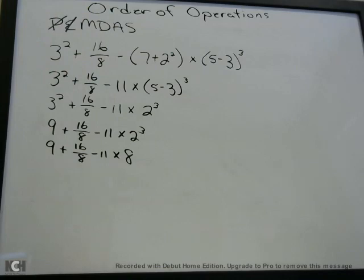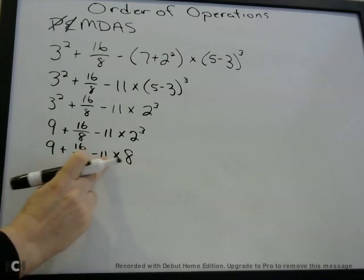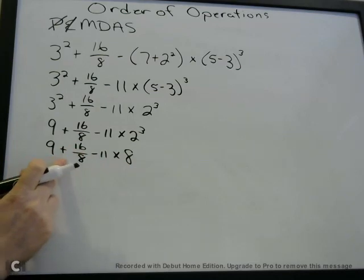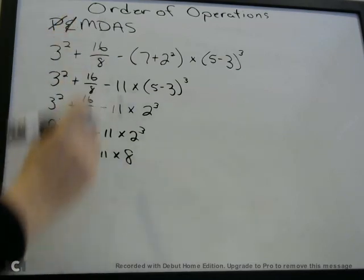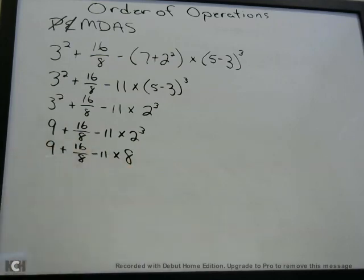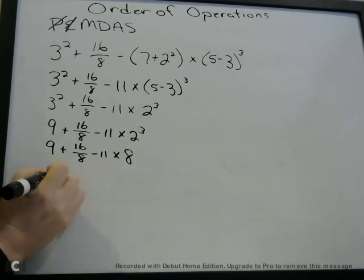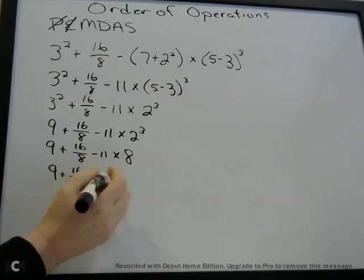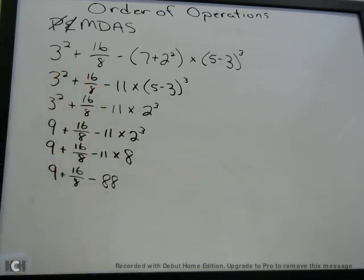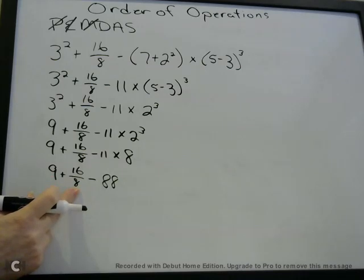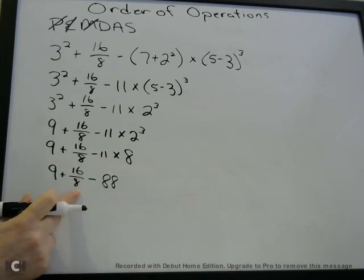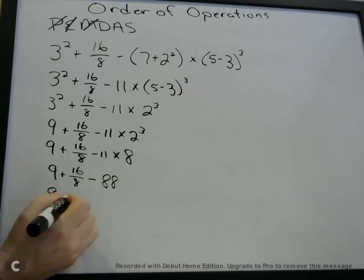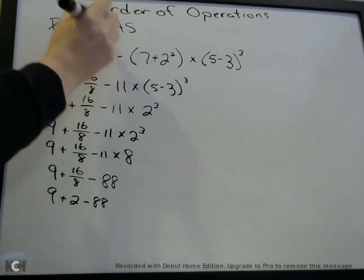Next, we're going to move into M — multiplication. We do have one multiplication: 11 times 8. We're not going to evaluate this left to right; we're doing the multiplication part because we're on M. 11 times 8 is 88. So I write 88 there — now we're done with multiplication. D is division. Remember, fractions are just divisions — the top number divided by the bottom number. So here we have 16 divided by 8. We all know 16 divided by 8 is 2. So we now have: 9 plus 2 minus 88. Now we're done with division.